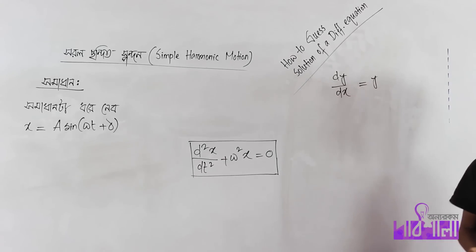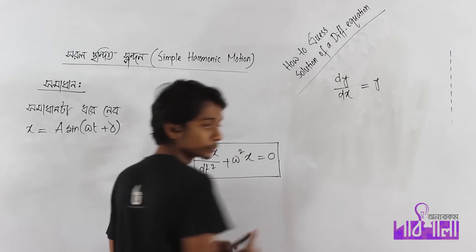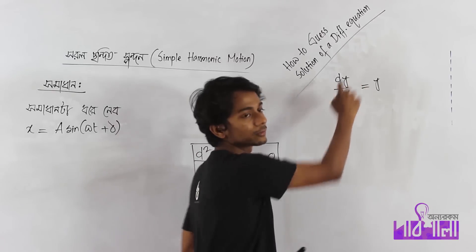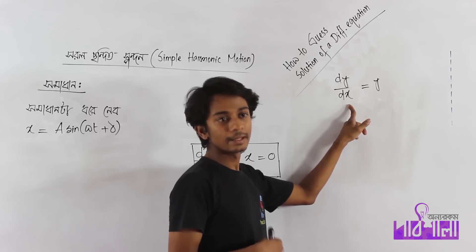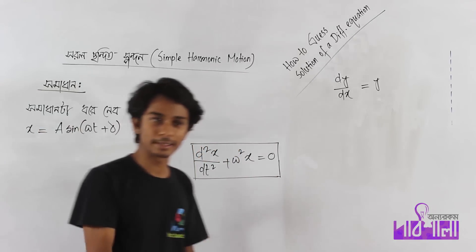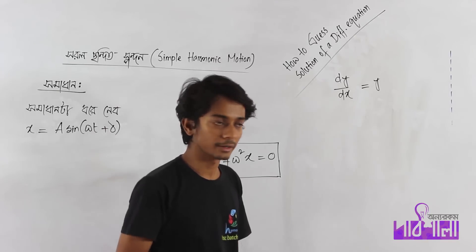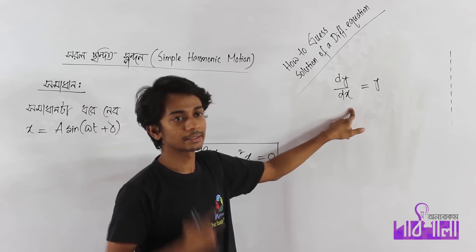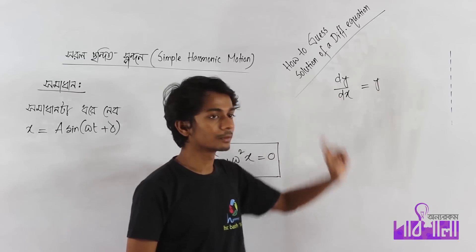The whole equation happens at the same time, and we differentiate twice. We know that the solution y is equal to mx, y is equal to sin x, e to the bar x, tan x, which means x-related.